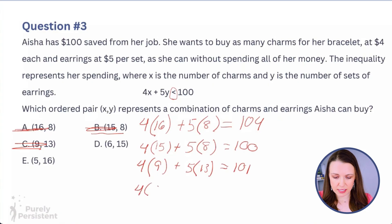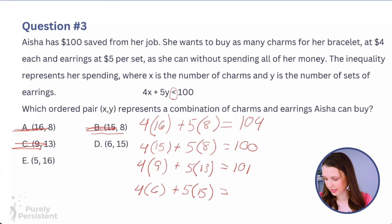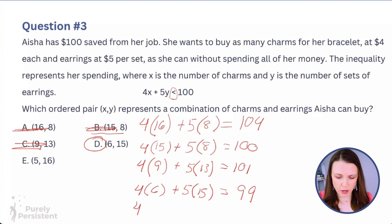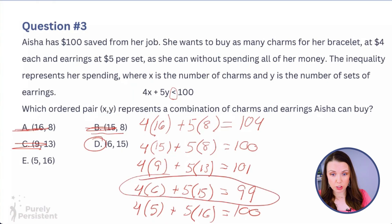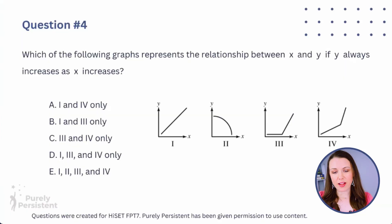Option D: 4(6) + 5(15) = 24 + 75 = 99 — yes! That's less than $100, so D is our answer. Let's check E just to be sure: 4(5) + 5(16) = 20 + 80 = 100 — no, not strictly less. So D is confirmed: Aisha can buy 6 charms and 15 sets of earrings.